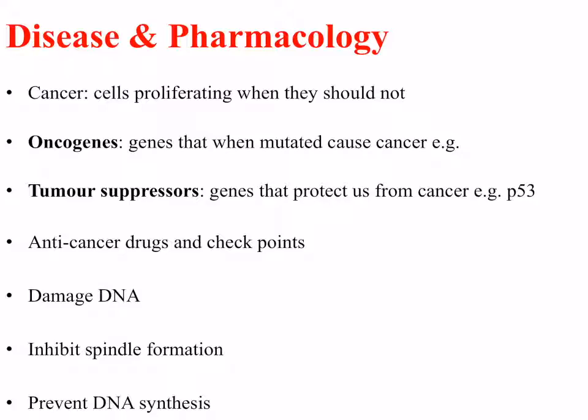This has huge relevance for diseases like cancer, where cells are proliferating when they should not. Genes called oncogenes, when mutated, can cause cancer by continually activating the cell cycle so the cell keeps dividing. P53 is known as a tumour suppressor. However, if P53 is mutated or its function is stopped, DNA can be damaged, that damage can cause mutation, and that mutation can carry on to further cells that are made.